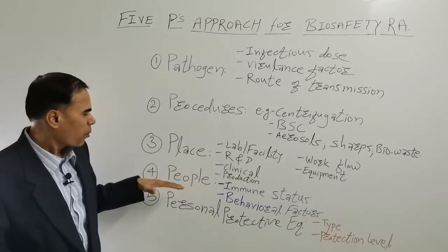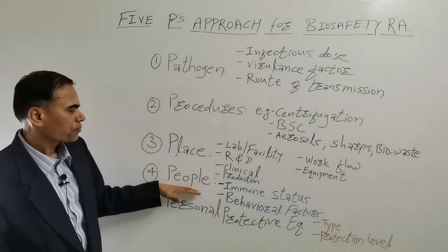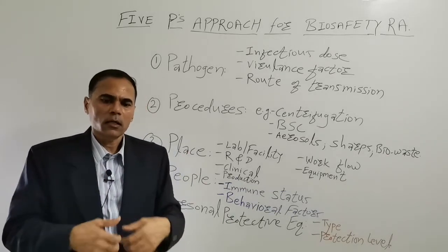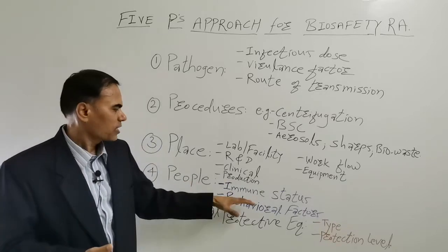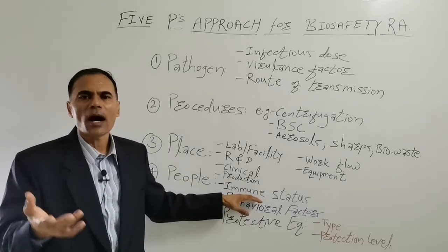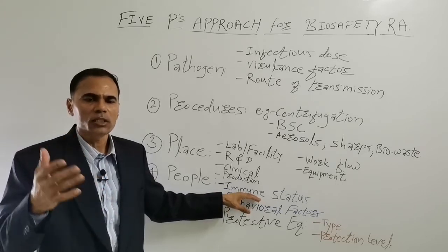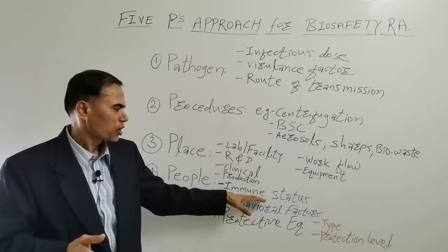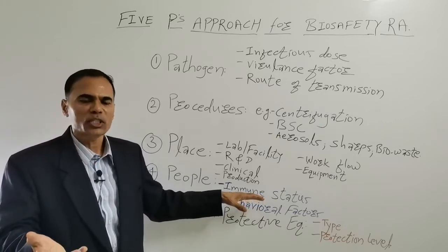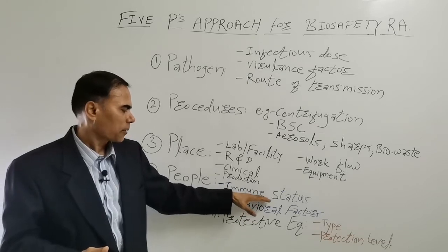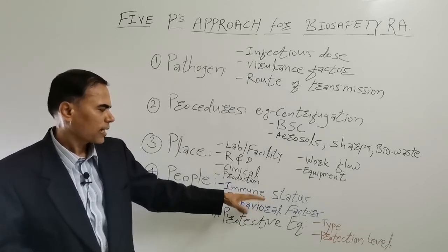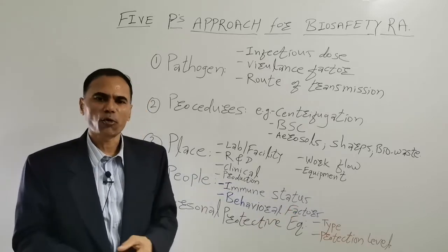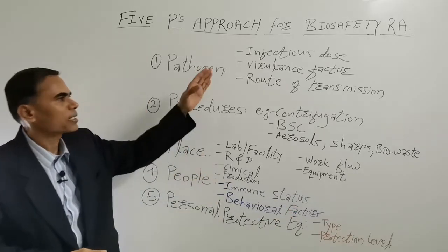The fourth P stands for People. You need to consider the people who are working there — their health status. Is there anybody who is immunocompromised? For example, if any researcher is pregnant and working in the laboratory, that also needs to be considered. Any laboratorian with an immunocompromised status must be considered. In addition, you also need to consider the behavioral factors of the humans, and based on that you can do the Biosafety risk assessment.